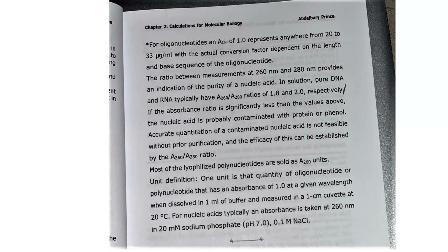The actual conversion factor is dependent on the length and base sequence of the oligonucleotide. The ratio between measurements at A260 and A280 provides an indication of the purity of the nucleic acid. In solution, pure DNA and RNA typically have A260/A280 ratios of 1.8 and 2.0 respectively. If the absorbance ratio is significantly less than these values, the nucleic acid is probably contaminated with protein or phenol. Accurate quantification requires prior purification, and the efficiency of this can be established by the A260/A280 ratio.